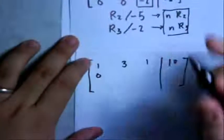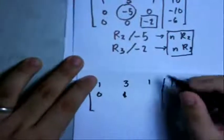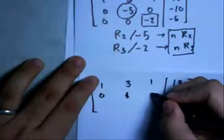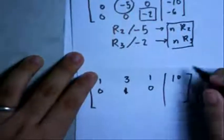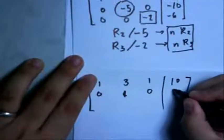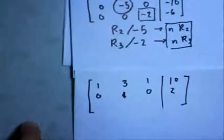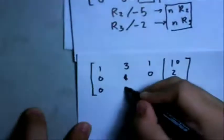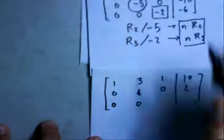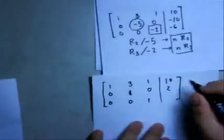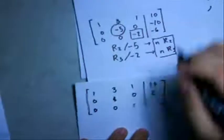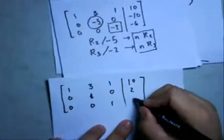0 divided by negative 5 is 0. Negative 5 divided by negative 5 is 1. Negative 10 divided by negative 5 is 2. For Row 3: 0, 0, negative 2 divided by negative 2 is 1, and negative 6 divided by negative 2 is 3.